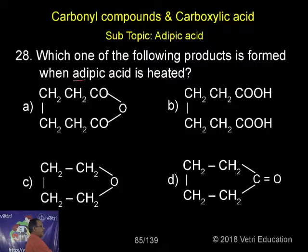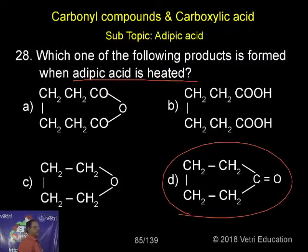So adipic acid has already written structure, 6 carbon atoms. So 6 carbon atoms corresponding anhydride, that means you have to think of, if it is 6, 1,6 means it will give cyclic ketone. So answer should be D.